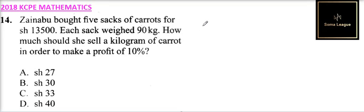Question number 14. Zainabu bought five sacks of carrots for 13,500 shillings, each sack with 90 kg. How much should she sell a kilogram of carrot in order to make a profit of 10%?